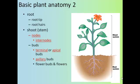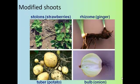Here's a picture of some modified shoots. Strawberry plants send out modified shoots called stolons, and those can actually root and become their own independent plants — basically clones of the mother plant. And contrary to what some people may believe, potatoes are not roots. Potatoes are actually modified shoots called tubers.